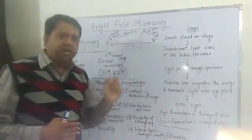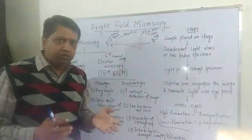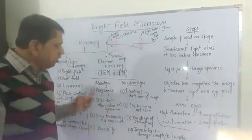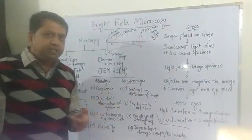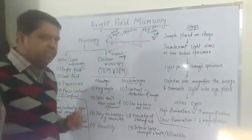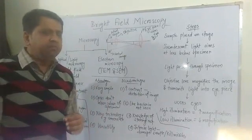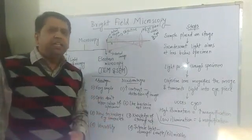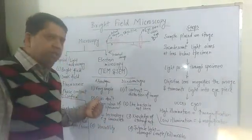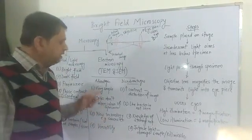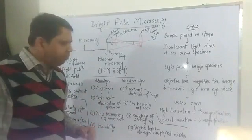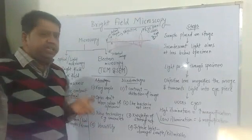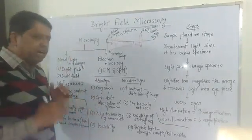There are some advantages and disadvantages of bright field microscopy. The first advantage is that it is very simple — very minute adjustments are required, and it can be easily performed even by a layman. It is one of the most elementary forms of microscopy and can be performed very easily in the laboratory.